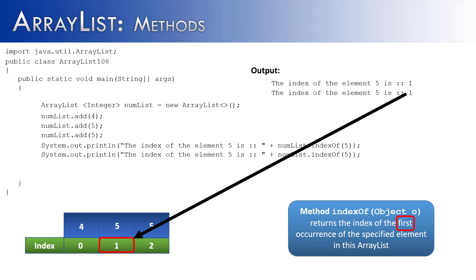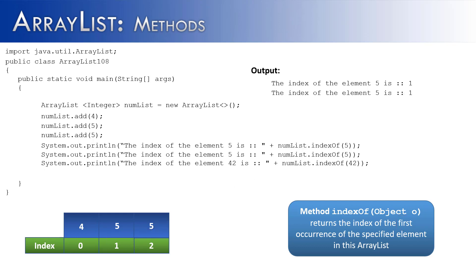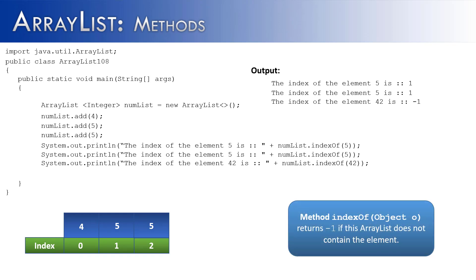indexOf is only going to find the first occurrence. What if we're looking for something that doesn't exist inside the list? There's no element 42 inside the list — would it return an error? No. It would just return negative 1. So indexOf returns negative 1 if the ArrayList does not contain the element you're searching for. In summary, indexOf either returns the index of the element or negative 1 if it's not in the list.